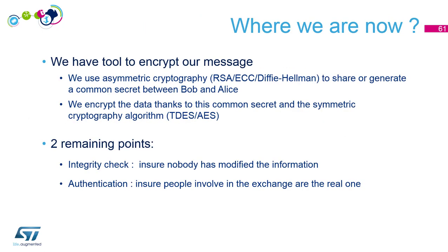We've seen how to encrypt messages and protect data. But there are two remaining points. Imagine Alice doesn't want to hide her message, but she wants two things: first, she doesn't want anyone to modify the message — that's integrity. Second, she wants Bob to be sure the message is coming from her, not someone else who just wrote 'Alice' at the end — that's authentication. So let's continue with integrity checks.